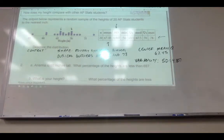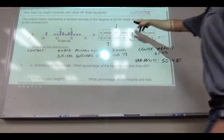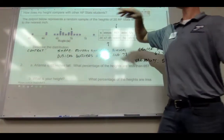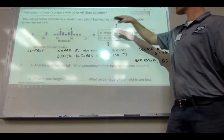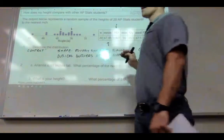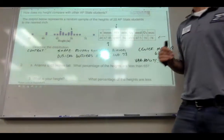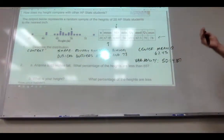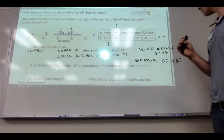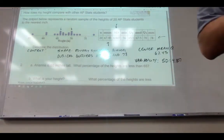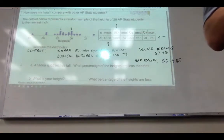You'd have to state the context. You'd say, this distribution of the sample heights of 20 AP stats students is roughly symmetric and bimodal. It has outliers of 56 and 78. Its center appears to be at its mean of 67.45 and it has a standard deviation of 4.807. Boom. You've now described it.